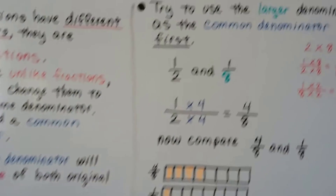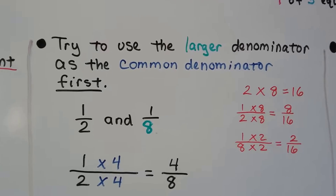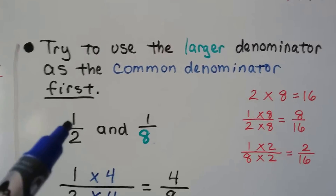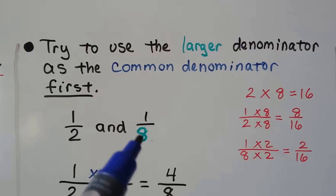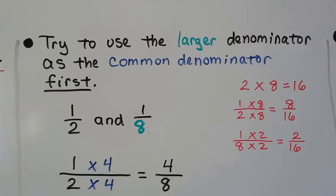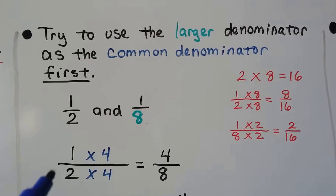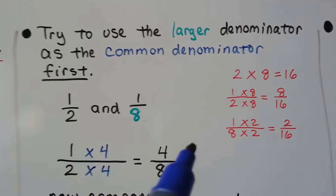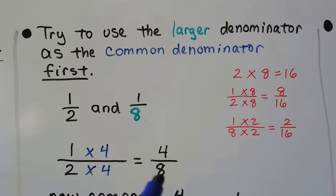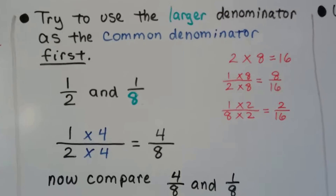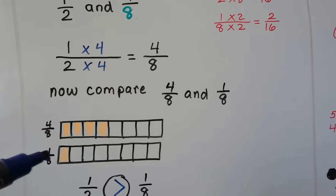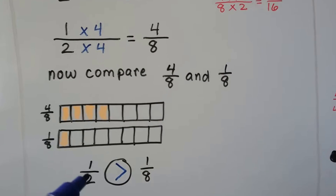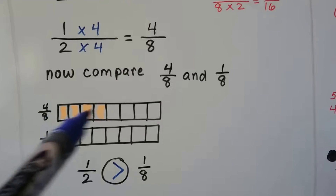We need to try to use the larger denominator as the common denominator first when comparing fractions. So here we have one-half and one-eighth. Because eight is the larger number, we're going to try to use it as our common denominator first. Two times what is eight? Four. So the one gets multiplied by four, and it would be four-eighths. Now we can compare four-eighths and one-eighth. We can see that four-eighths, which is one-half, is greater than one-eighth — there's more shaded.